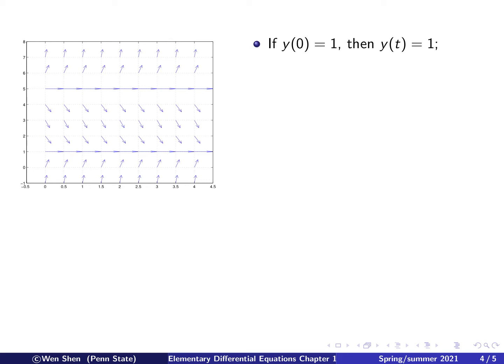First, we observe that if y(0) equals 1, I shall be here. Then, since the arrow pointing to a horizontal direction, I'll just keep going along this horizontal line. So, y equals 1, the constant, is a solution. And then, by the same argument, if the initial value shall be at 5, and then I will stay on the horizontal line, and the constant is a solution.